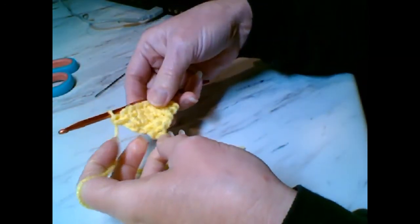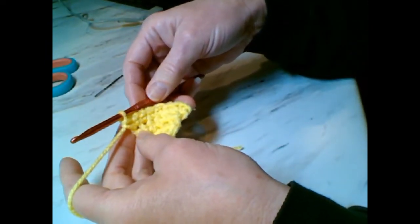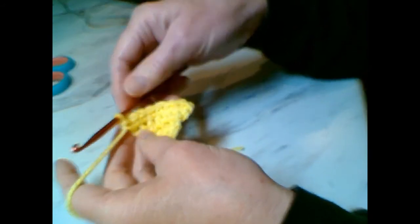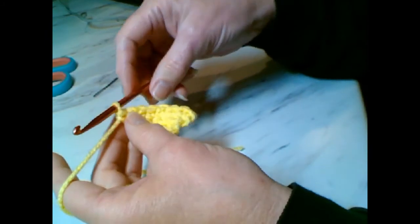And there you have your beak if you want to make it a little taller. I wouldn't increase any more, but I would just chain one, turn, and do single crochets all across the top. But this is a pretty typical size.